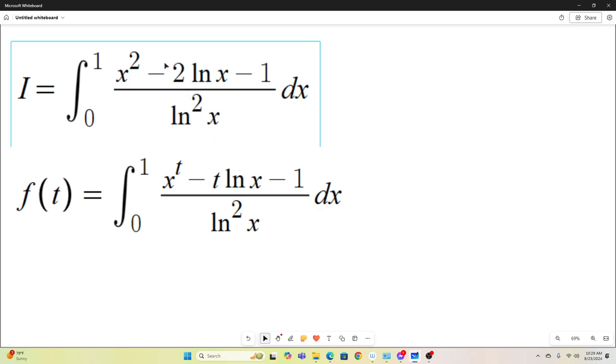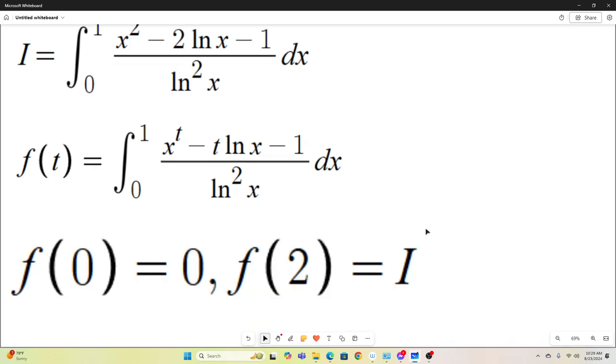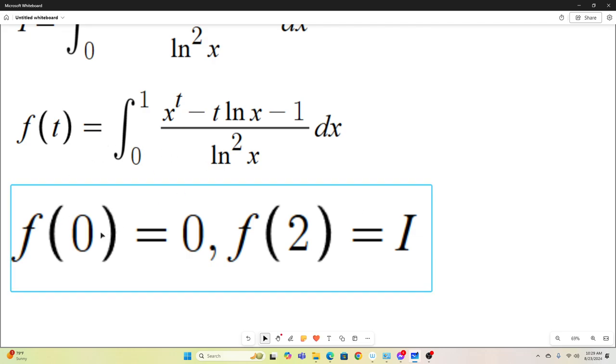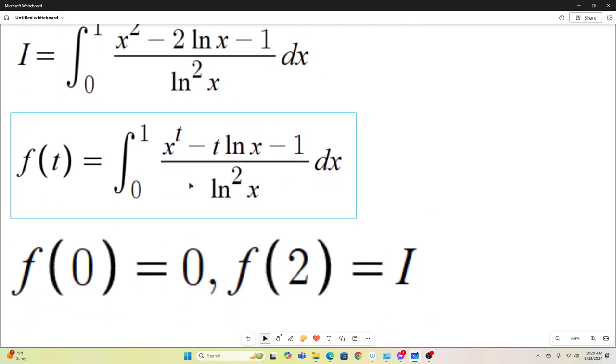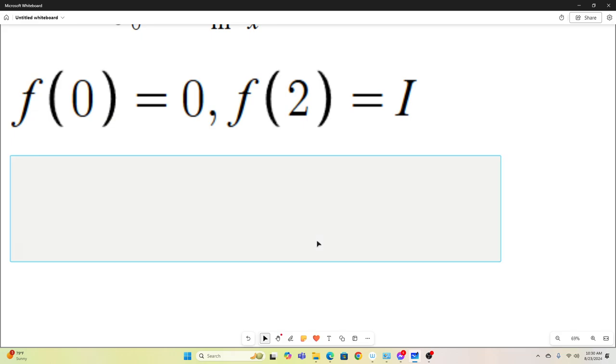You can see that the reparameterization involves replacing this squared with a t, and also this constant multiple in front of the natural log x with a t. And then we'll notice that if we evaluate our f of t at the point t equals 0, we get x to the 0, which is 1, minus 0, minus 1. So 1 minus 1 is 0. That evaluates to 0. And if we plug in 2 for t, we just get back our original integral. So that's nice. Next step.